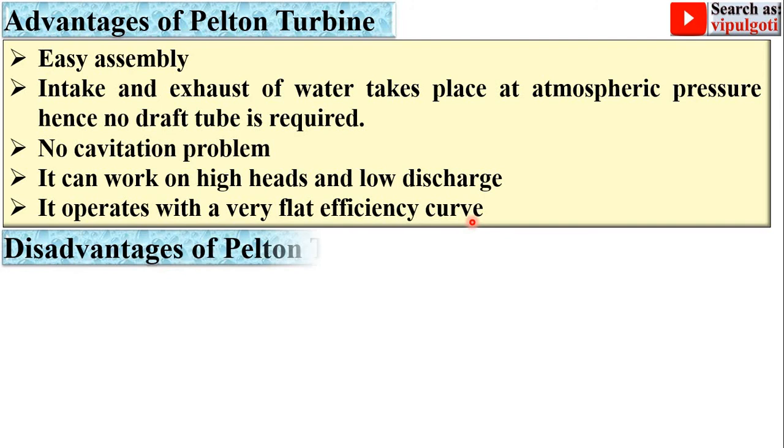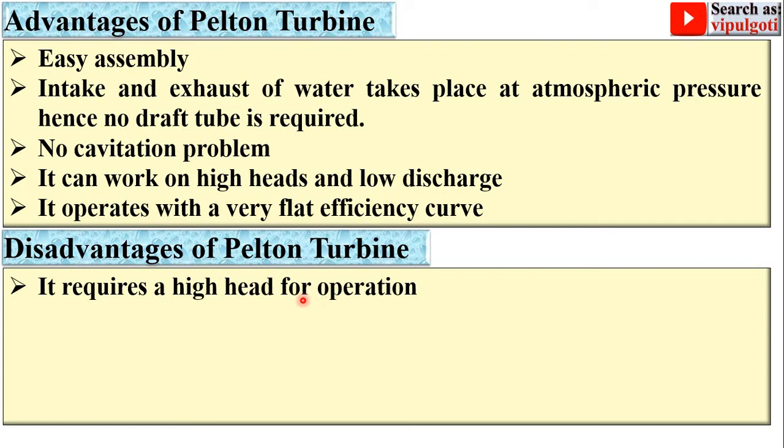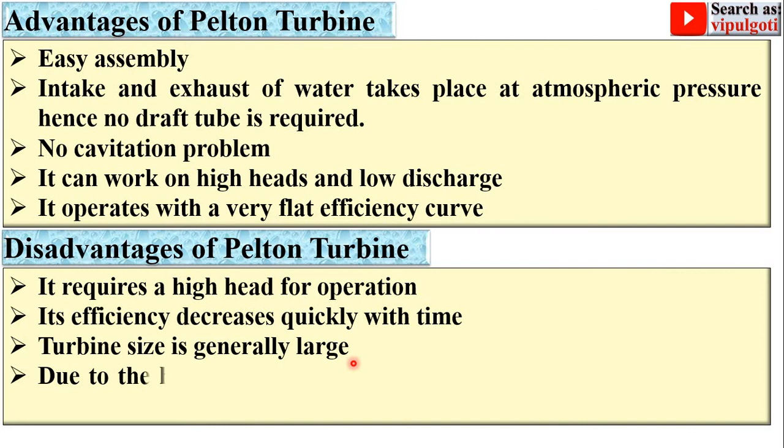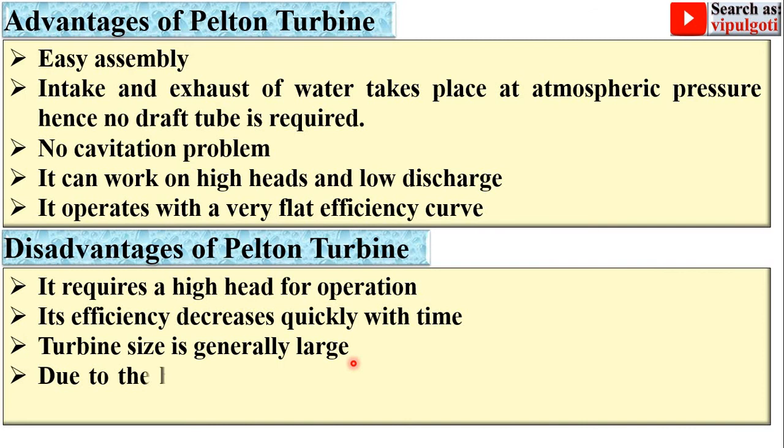Now, disadvantages of the Pelton turbine. It requires a high head for operation. Its efficiency decreases quickly with time. Turbine size is generally large. Due to the high head, it is very difficult to control variations in the operating head.